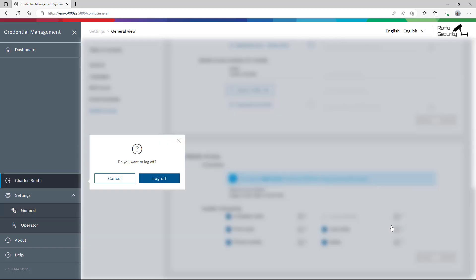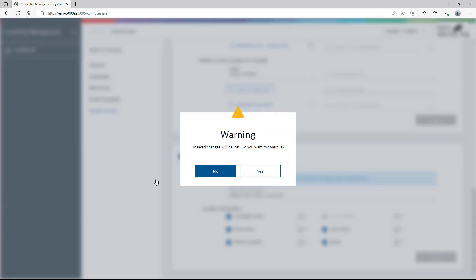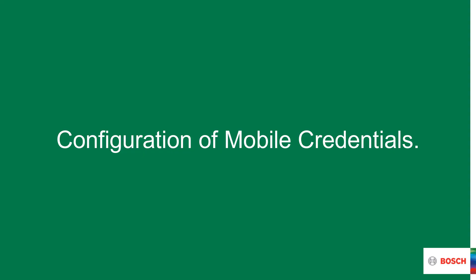Now we can start rolling it out to our readers. Using the IP address is the safest option if you are not sure about reliable naming resolution. The condition is that this IP address is also registered during the installation of mobile access. The mobile access port number is always 5700. To further configure mobile access, Charles needs to log off and on again. Now that we have installed and configured the mobile access, we can start rolling it out to our readers.